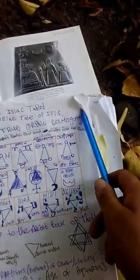This is called the Isiac Tablet, Benbeen Table of Isis. I believe this is the true Orphic cosmogony. It can lead you to the true Orphic cosmogony. Now there's a few things you have to remember.